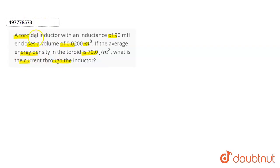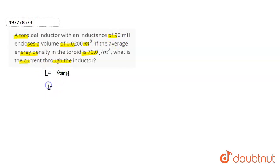So we have a toroidal inductor. Inductance L is 90 mH, which we convert to 90 × 10⁻³ H.